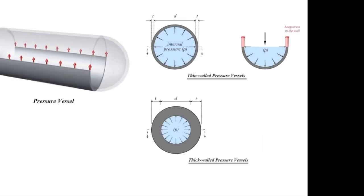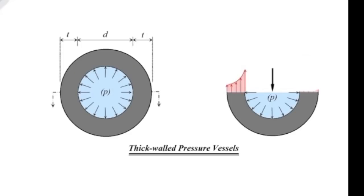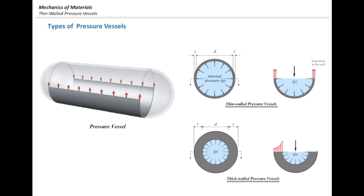However, if we have a thick wall pressure vessel, as shown in the bottom figure, the distribution of stress along the wall thickness is not uniform anymore. In that case, we cannot use the equations we are talking about today. Whatever we discuss today is valid only for thin-walled pressure vessels. For thick-walled pressure vessels, we need to develop other equations to account for that non-uniform distribution of stresses.